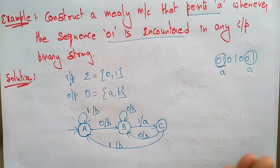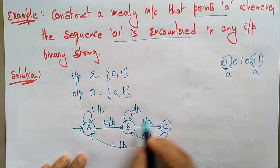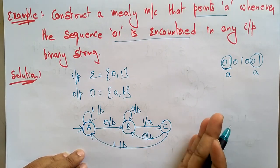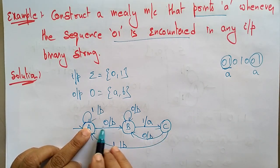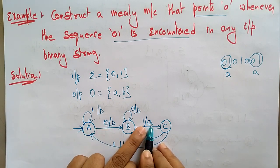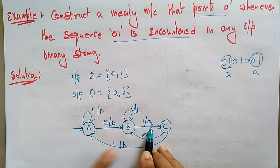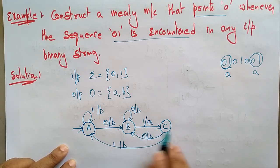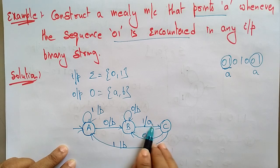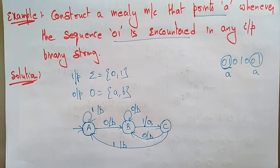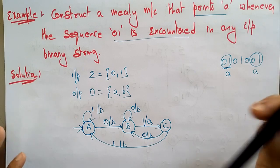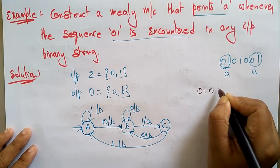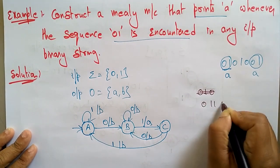This is the Mealy machine. Whenever the sequence '01' is encountered in the input string, it prints 'a'. Let me take an example to verify: input string '0110'. Whenever '01' appears, 'a' should be encountered; if there is no '01', 'a' should not appear.